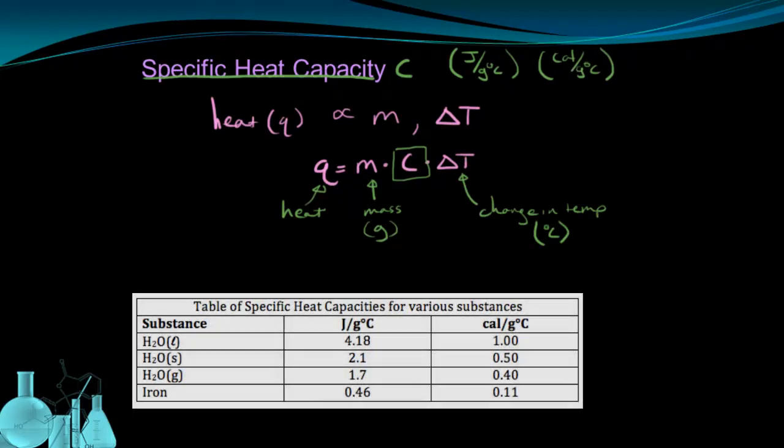Here's a table that shows some specific heat capacities for various substances. We have liquid water, solid water, or ice, and water in the gaseous state, vapor. There's also iron shown here.